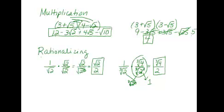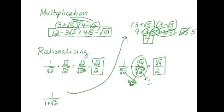I have one more type of example: what if you have a binomial radical in the denominator? Let's do 1 over (1 + √2). If you multiplied the denominator by √2, you'd get √2 + 2 — you wouldn't get rid of any radical, you'd just move it to a different place. So that's not going to work. I'm going to bring your attention back to the earlier example where we multiplied conjugate binomial radicals, and those irrational terms in the middle canceled out. So I'm going to multiply this denominator by its conjugate, which would be 1 - √2.